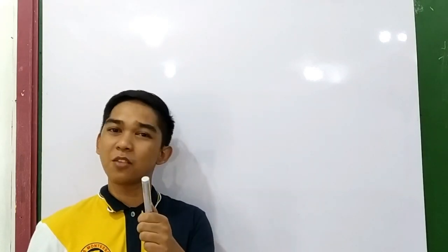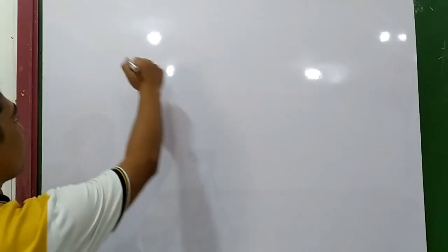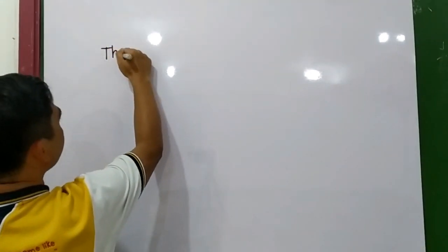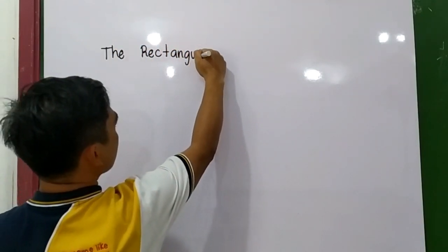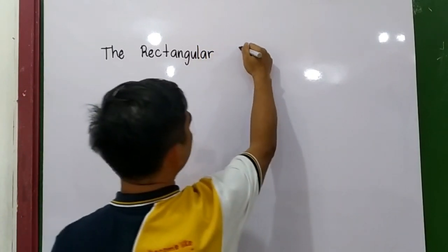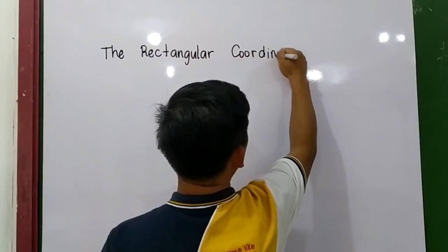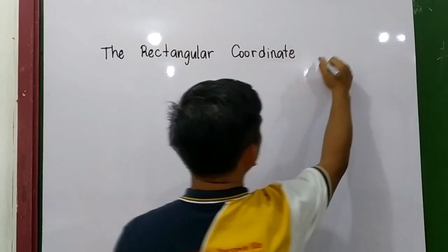Hello, welcome back to Senior Pablo TV. Today our lesson is for Grade 8, for the third quarter. The lesson is about the Rectangular Coordinate System. But before we start, please don't forget to subscribe and click the notification bell in order for you to be notified for our next videos.